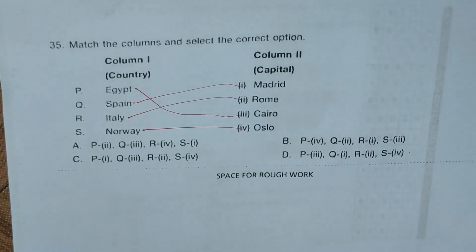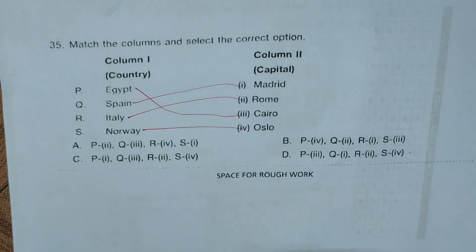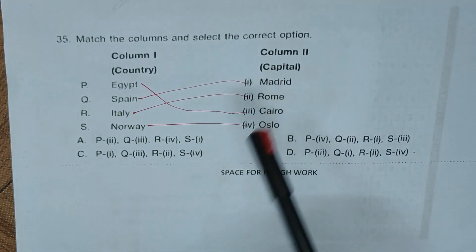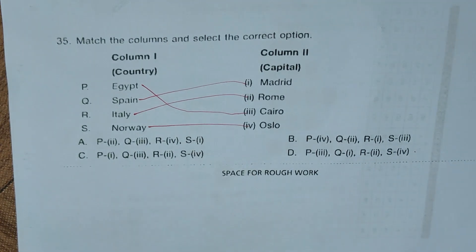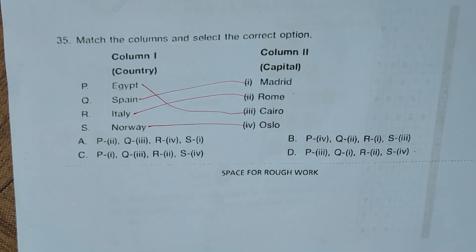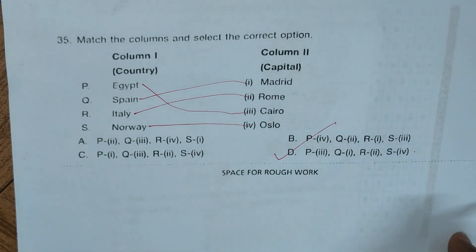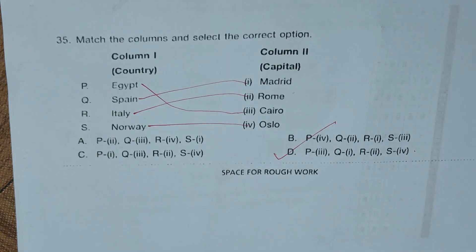Question 35: Match the columns — country and capital. Egypt's capital is Cairo, Spain's capital is Madrid, Italy's capital is Rome, and Norway's capital is Oslo. The correct matching combination is displayed in option D, making D the right answer. That completes all 35 questions of this worksheet for Class 3, IGKO 2022-2023 series, Set A.